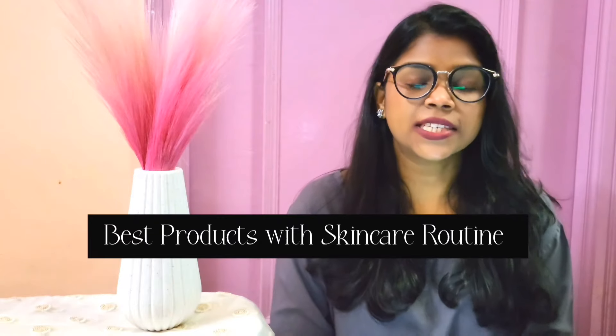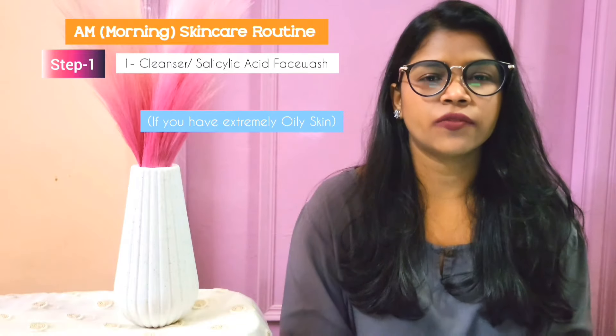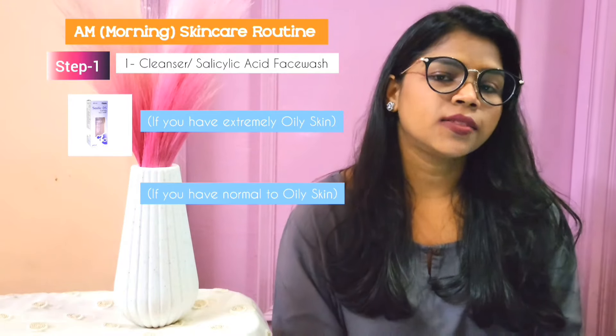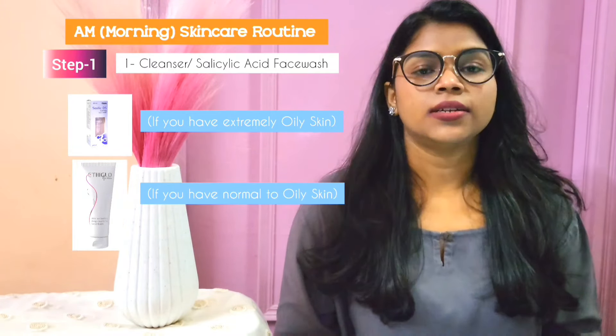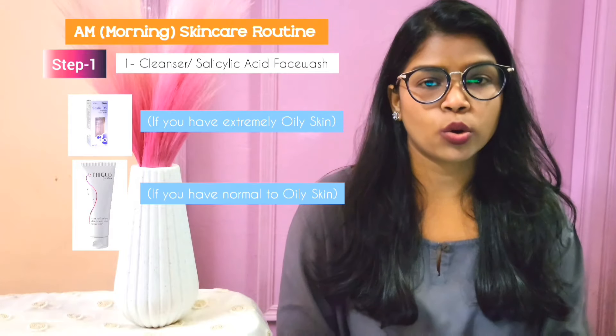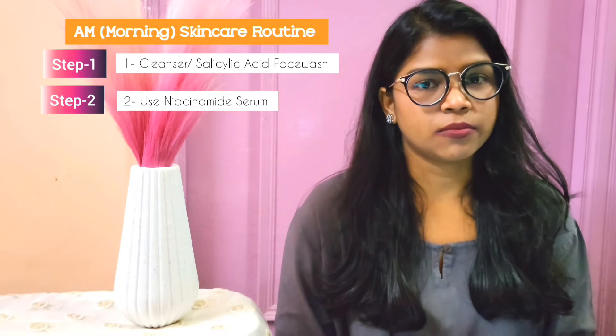Now we will see the best product recommendations. The skincare routine is divided into two parts: AM and PM. For the AM skincare routine, start your morning with a cleanser — a good mild cleanser, or you can add a salicylic acid-based face wash. If you have very oily skin, go for the Salicylic DS face wash; if you have normal to oily skin, you can use the Ethyglow face wash. Salicylic acid has the power to remove dead skin cells by getting deep into the pores to prevent clogging and new acne formation.